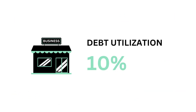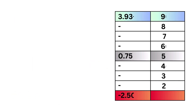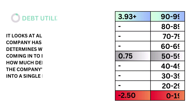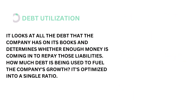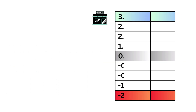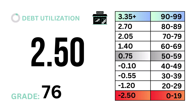Fourth, debt utilization, which accounts for 10% of the business factor. Debt utilization looks at all the debt the company has on its books and determines whether enough money is coming in to repay those liabilities, and how much debt is being used to fuel the company's growth. It's optimized into a single ratio. The models tell us that a debt ratio of 0.75 is considered average. Here's our debt ratio and debt utilization grade.